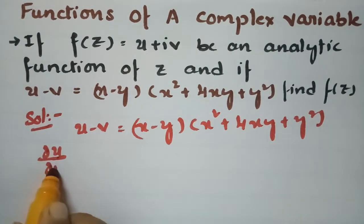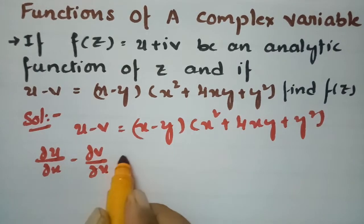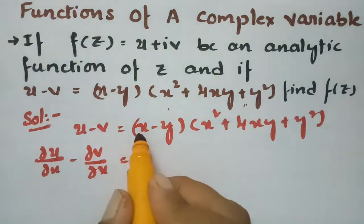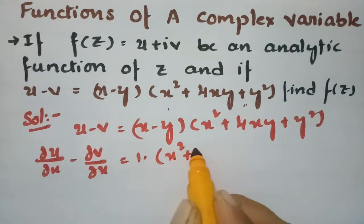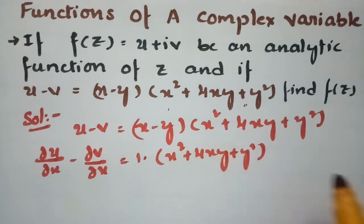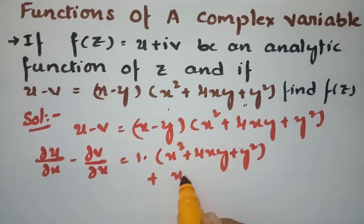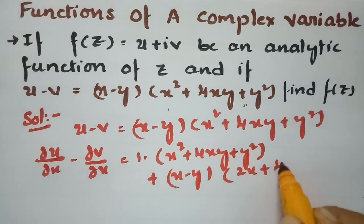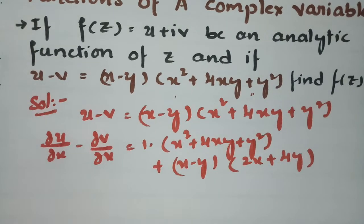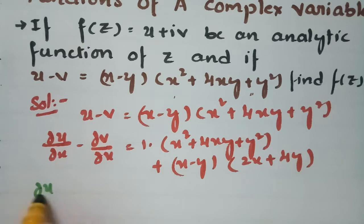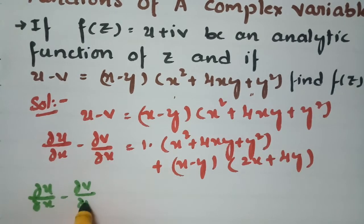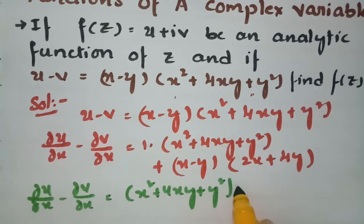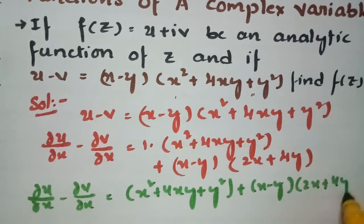So that is ∂u/∂x minus ∂v/∂x. Using the UV rule, the first function is (x - y) and the second is (x² + 4xy + y²). Differentiating: first function times derivative of second gives 1·(x² + 4xy + y²), and leaving x - y times derivative of second: 2x + 4y. So ∂u/∂x minus ∂v/∂x equals x² + 4xy + y² + (x - y)(2x + 4y).